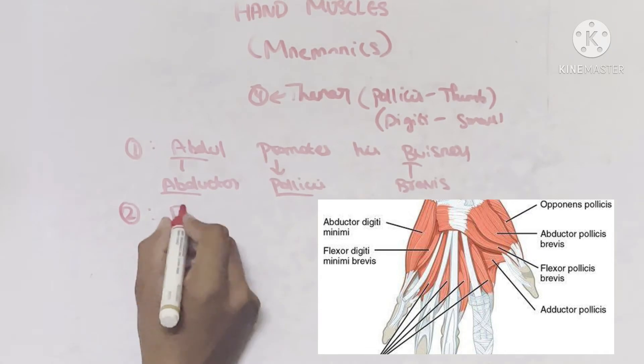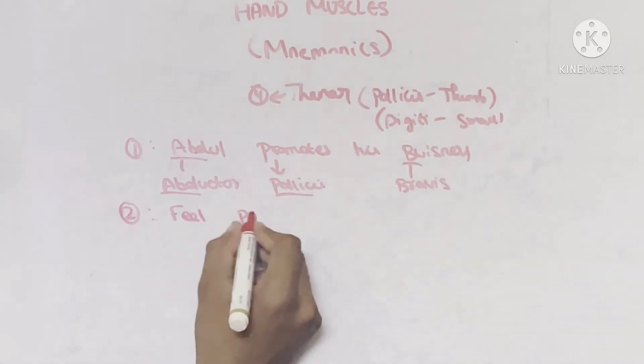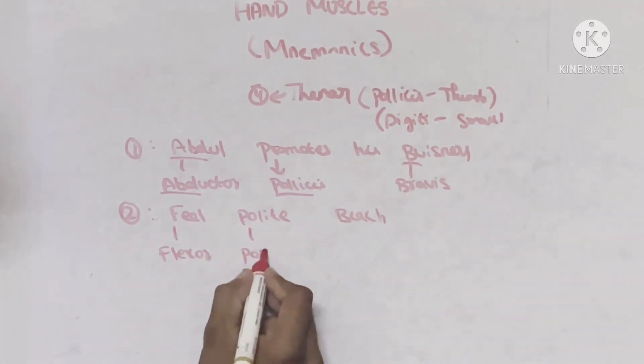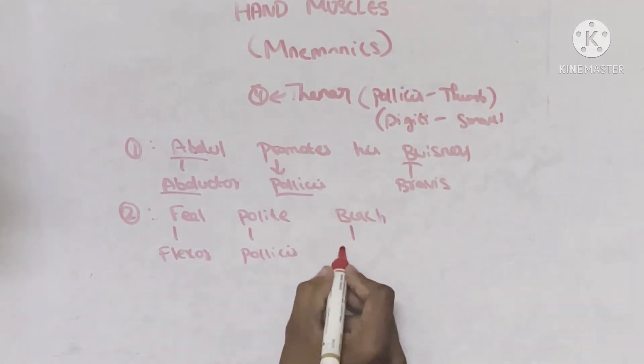If you take second muscle: 'Feel polite speech.' So here F stands for flexor, P stands for again pollicis, B stands for brevis.